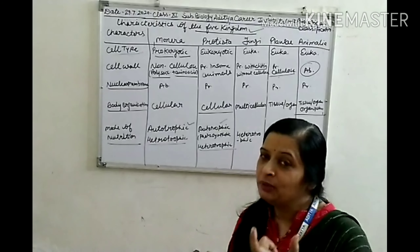Next is body organization. In Monera, it is cellular — a single cell performs all metabolic reactions. In Protista, also a cellular structure is present. In Fungi, the kingdom is multicellular — two or more cells are present and they perform different types of metabolic reactions. In Plantae, tissues and organs are present — cells make up tissue, tissue makes up organs, and these are well-developed in plants.